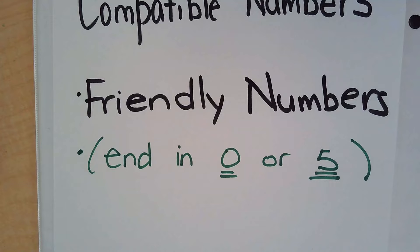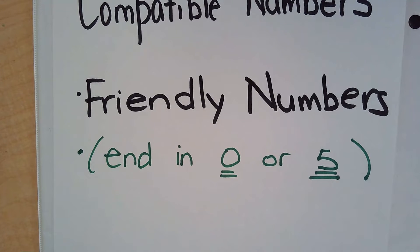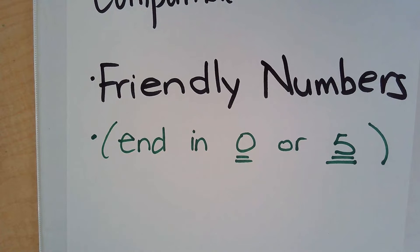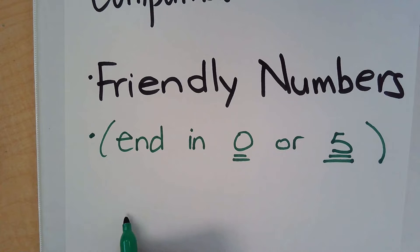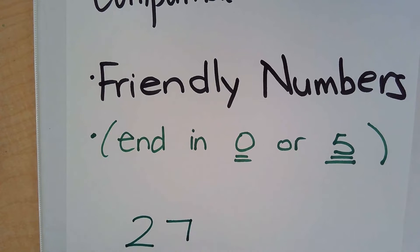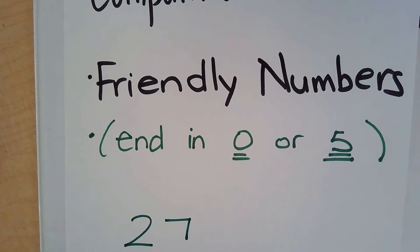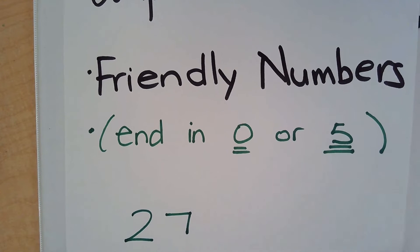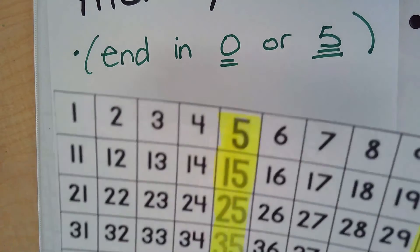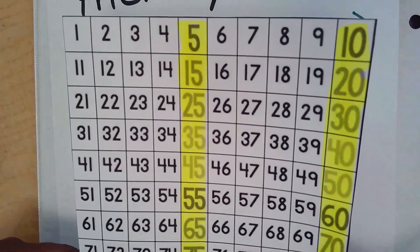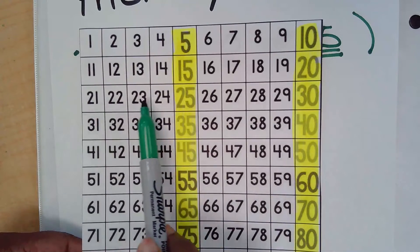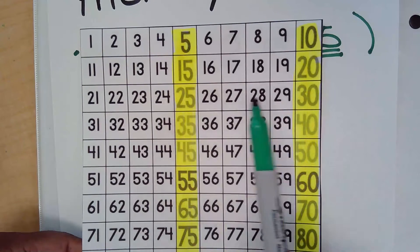So I'm going to do a problem, a couple actually, and you'll see how I can figure out which one of my numbers is the most compatible to use. So here's one example: 28 plus 38. So the first thing I will do is I'm going to look at my hundreds chart and I'm going to find the number 28. Here's the number 28. It is in the same row as 25 and 30.